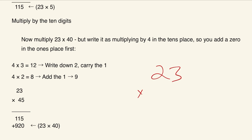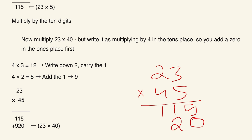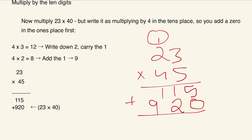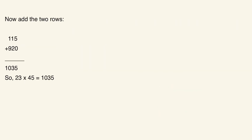We already have 115. Now write the 0, then 4 times 3 is 12 — write down the 2 and carry the 1. Then 4 times 2 is 8, plus the carried 1 gives 9, so we write 920. Finally, add 115 plus 920, which gives 1,035. That matches the box method answer, confirming 23 times 45 equals 1,035.